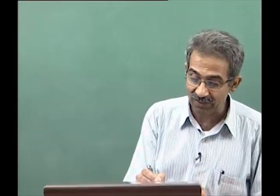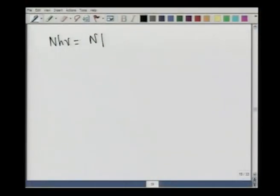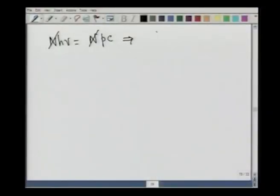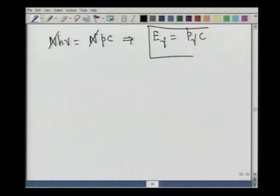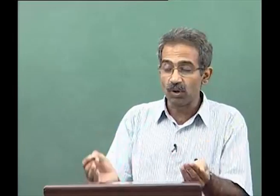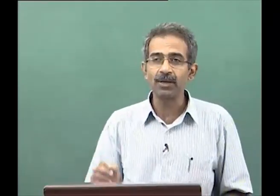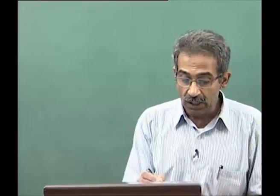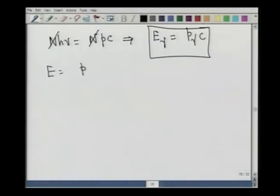This gives us the energy carried by each photon: E_gamma equals p_gamma times c. The relation between energy and momentum is linear: E_gamma equals p_gamma c. In the Newtonian case, we wrote energy equal to p squared divided by 2m — the kinetic energy of a particle. These two relations are clearly incompatible with each other.